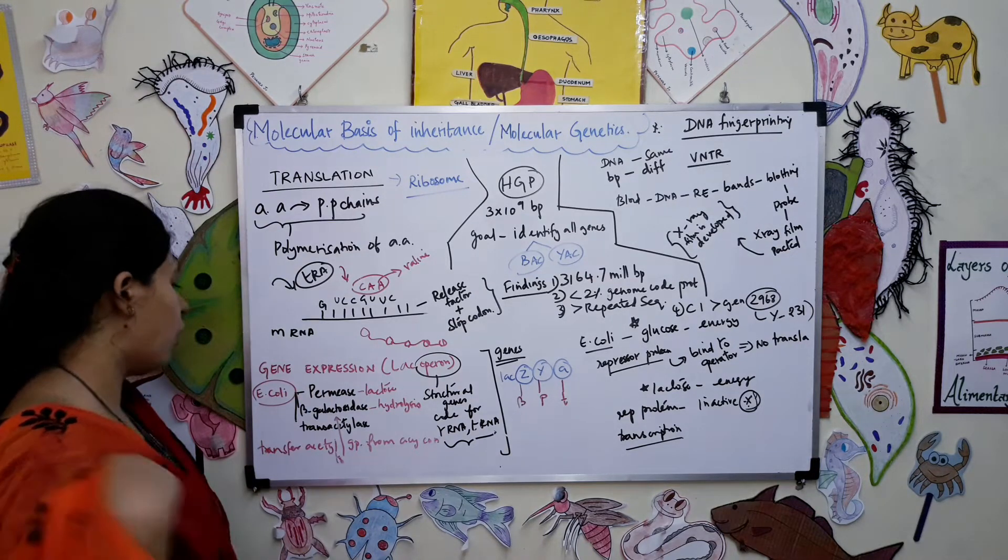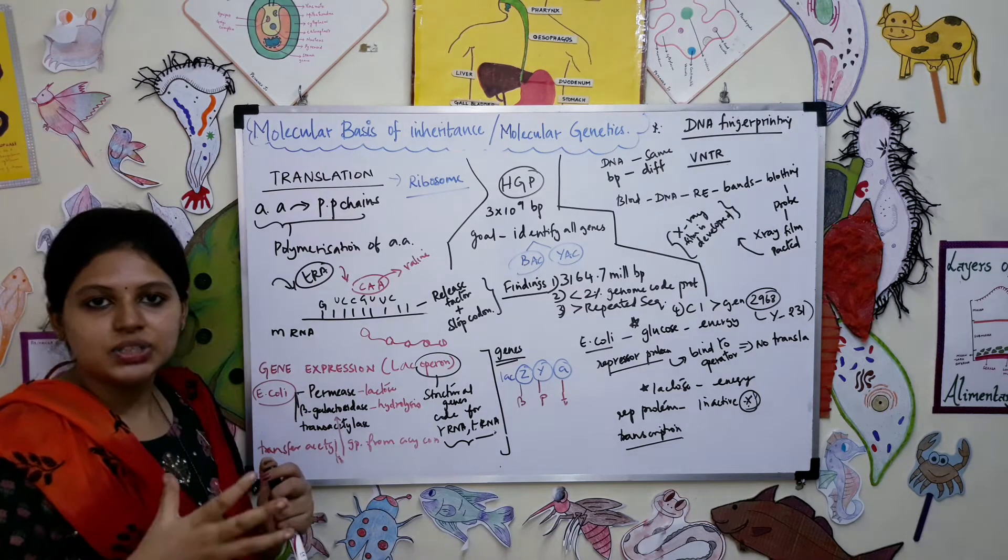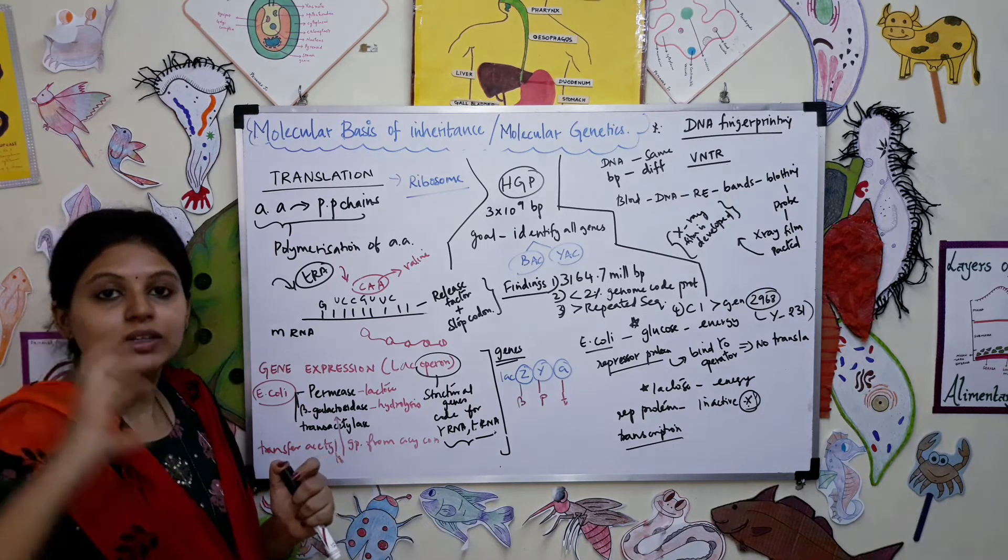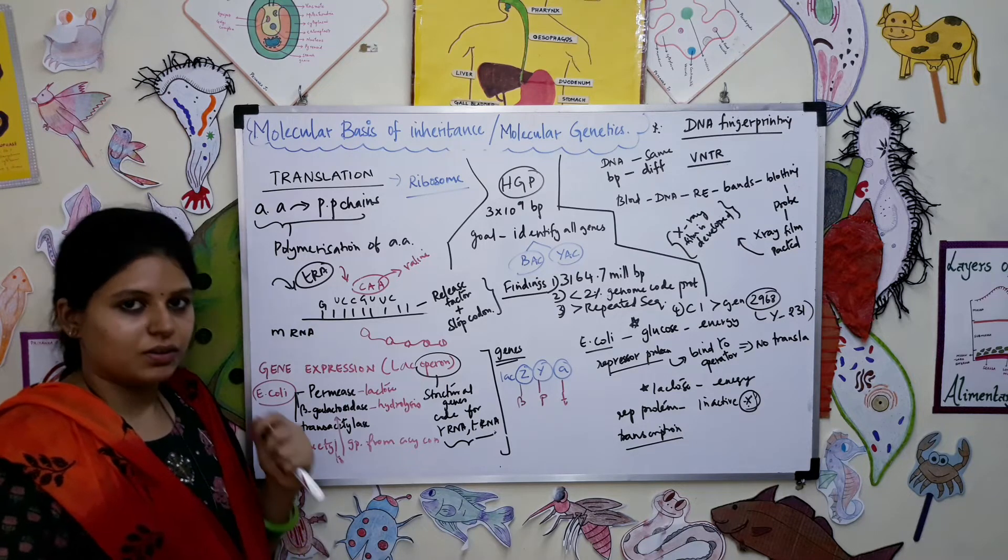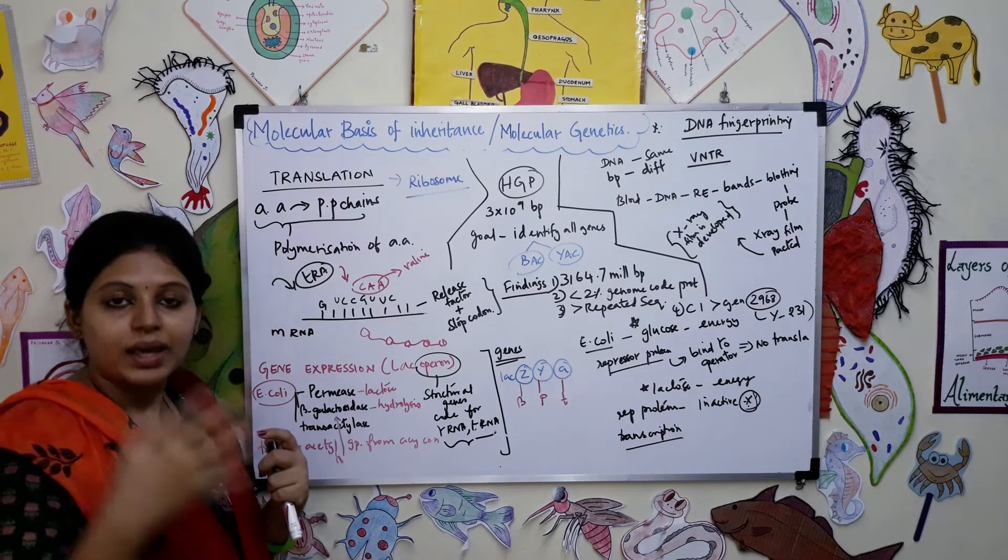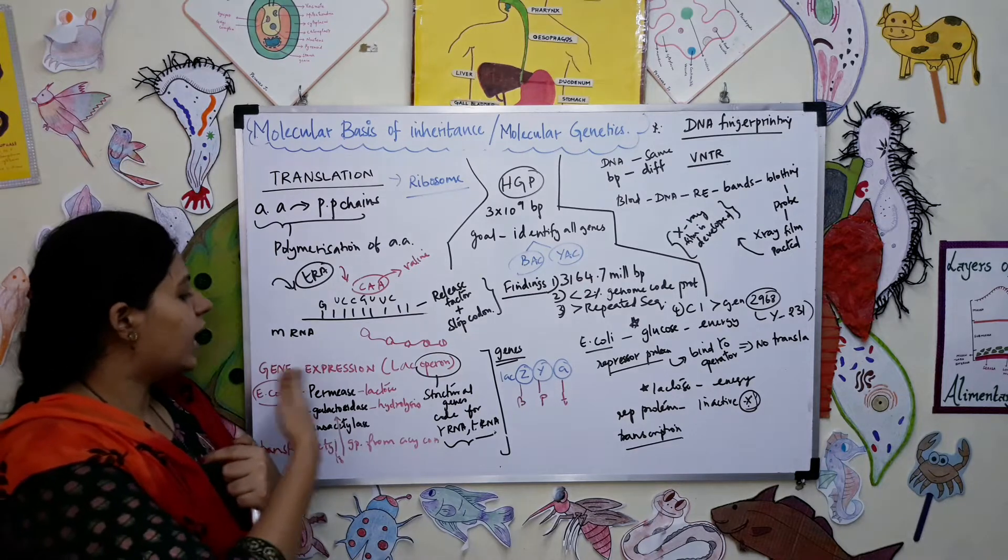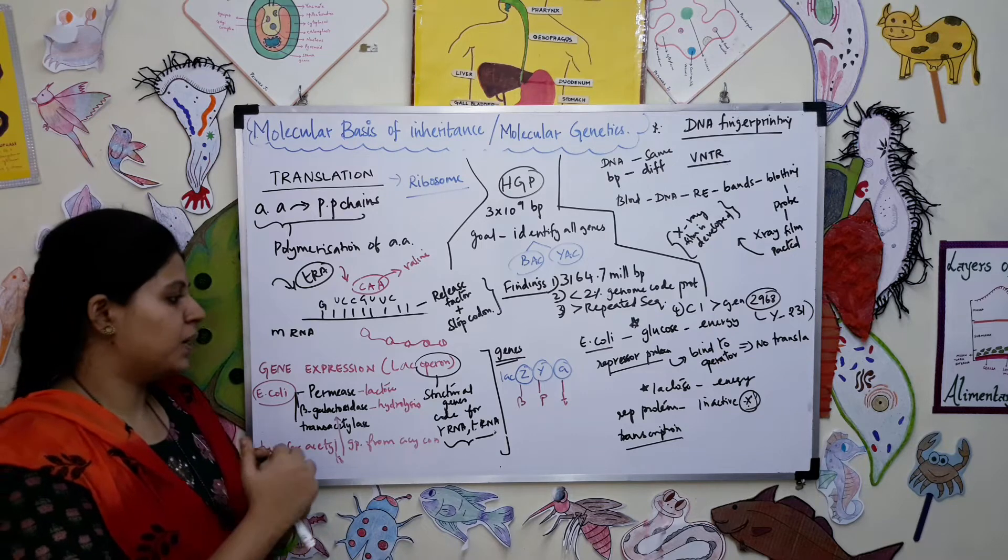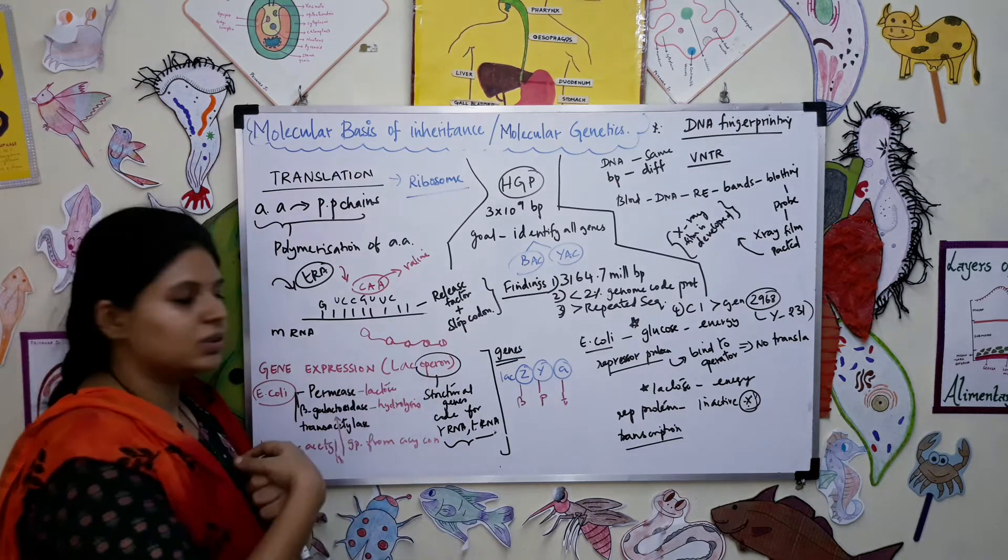Now we will talk about the expression of gene - how a gene has been expressed. A gene will have both positive side and negative side; it could either suppress or express. Express meaning it will start finding its own way; if it is suppression it will stop its way. That is called gene expression.